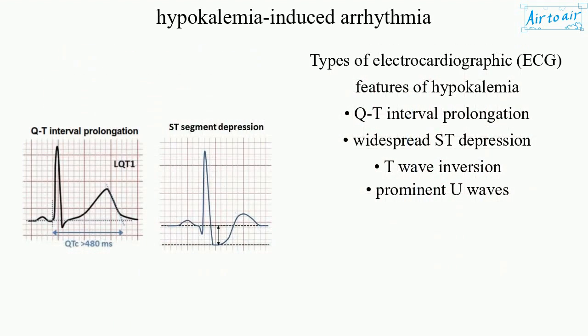Types of electrocardiographic (ECG) features of hypokalemia: QT interval prolongation, widespread ST depression, T-wave inversion, and prominent U-waves.